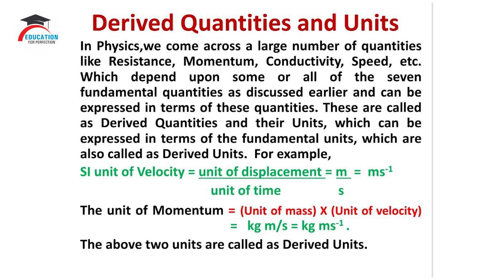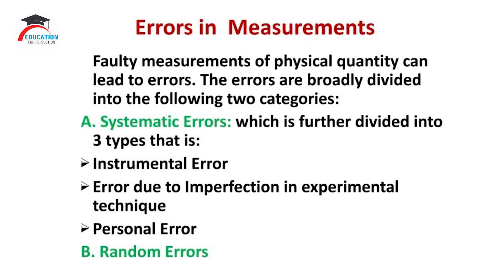For example, the SI unit of velocity is equal to the unit of displacement divided by the unit of time, which can be written as meters per second or m·s⁻¹. Similarly, the unit of momentum equals unit of mass into unit of velocity, written as kg·m/s or kg·m·s⁻¹. Both of these are examples of derived units.